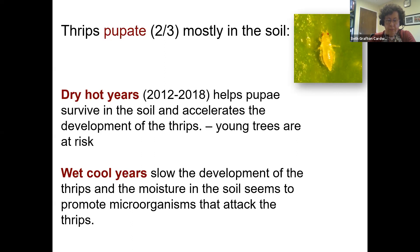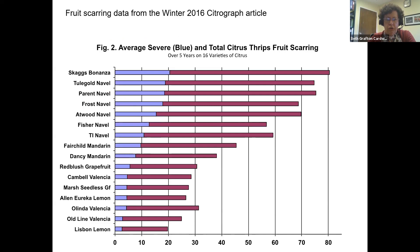Joe Morris wrote an article in the Winter 2016 Citrograph Journal showing what kinds of damage he observed over the years in variety trials — both severe and slight damage. The blue area represents severe damage and the red represents slight damage. You can clearly see that some varieties are much more easily damaged than others. Generally it's the navels that are easily damaged, the mandarins and Valencias less so — probably Valencias least of all.